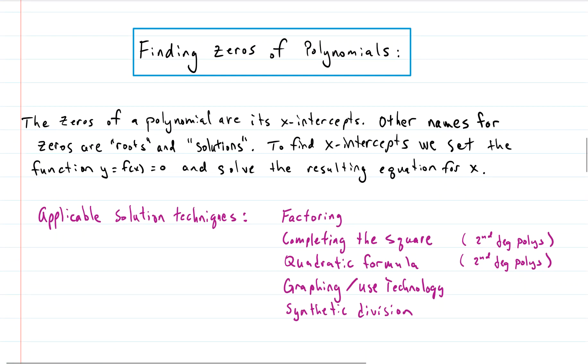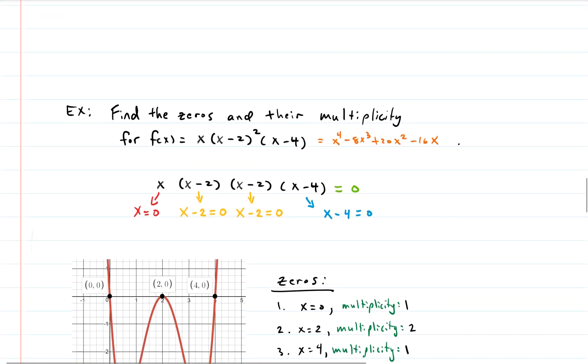When you're finding zeros of polynomials, all you're really doing is finding x-intercepts. That's it. There's some other names that we use for zeros. They are roots and solutions and x-intercepts. Those are all the same thing. It's kind of confusing, I know, but all of those mean the same thing. So how we find x-intercepts? That's something you've probably done a lot. You just take the function set equals zero and then solve the resulting equation for x. And how do you solve for x? Well, you can factor, you can complete the square, you can use the quadratic formula, you can graph or use technology, you can use synthetic division. All of those things will help you find zeros.